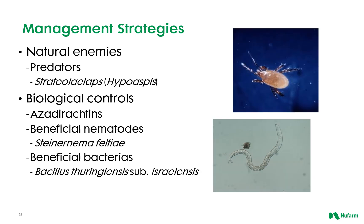In addition to sanitation and water management strategies, there are a few more natural strategies to examine, including predaceous natural enemies such as Stratiolaelaps, biological controls including azadirachtin products which are insect growth regulators, beneficial nematodes like Steinernema feltiae, and the beneficial bacteria Bacillus thuringiensis subspecies israelensis.